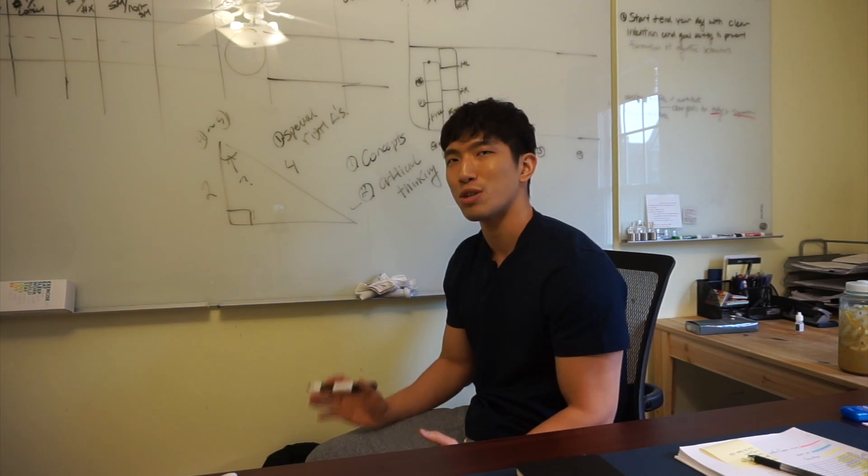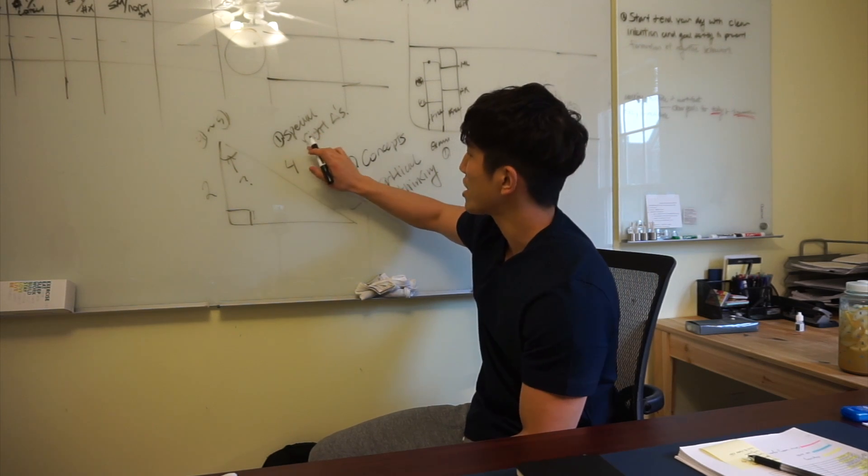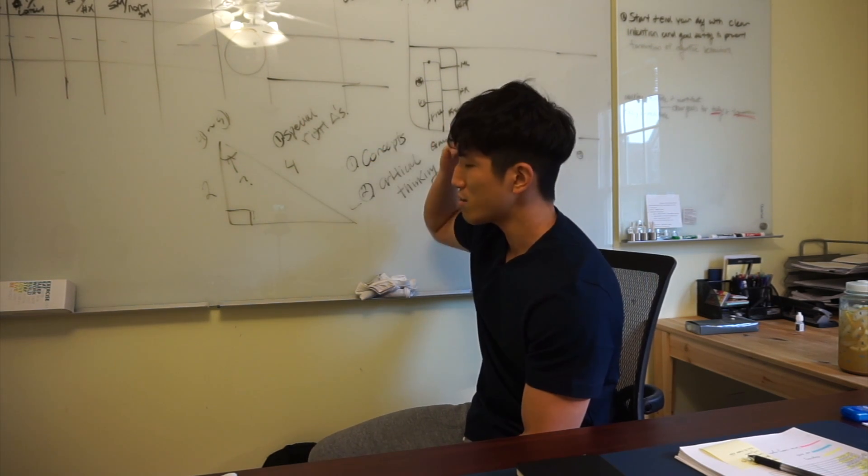So, if it's a right triangle on the SAT, there's a very high chance that the question is testing special right triangles, right?